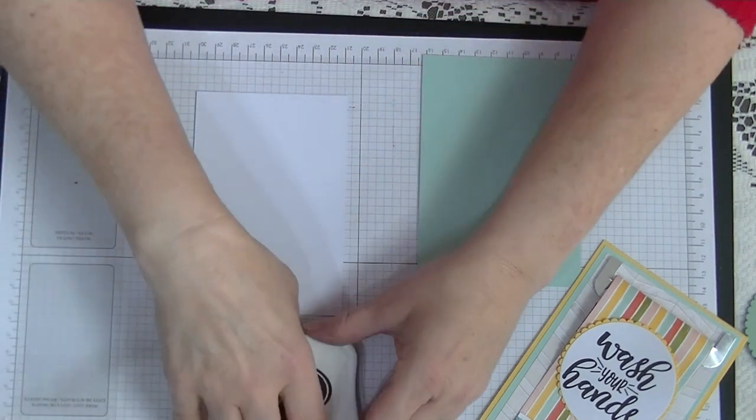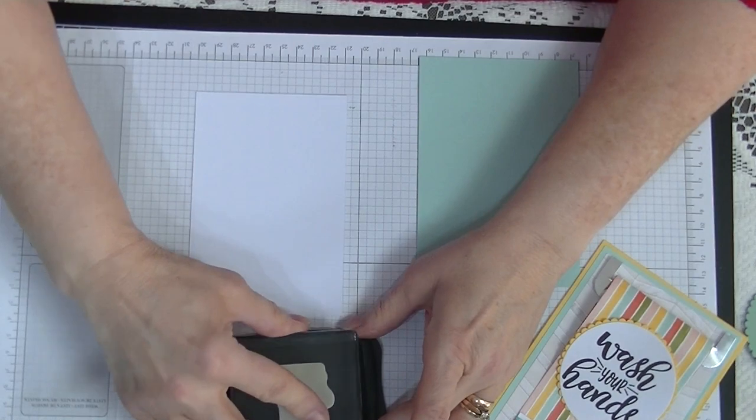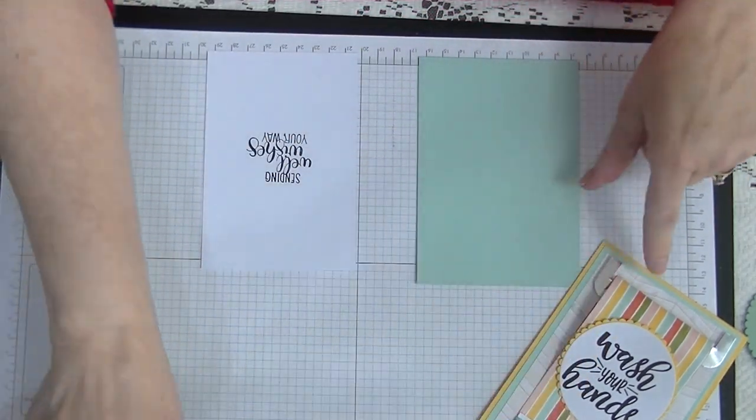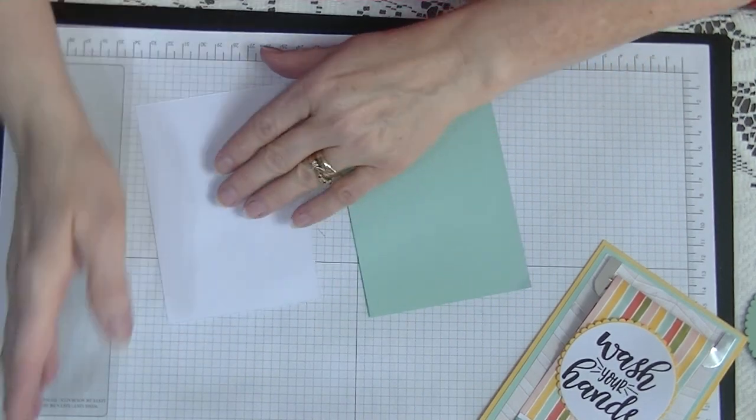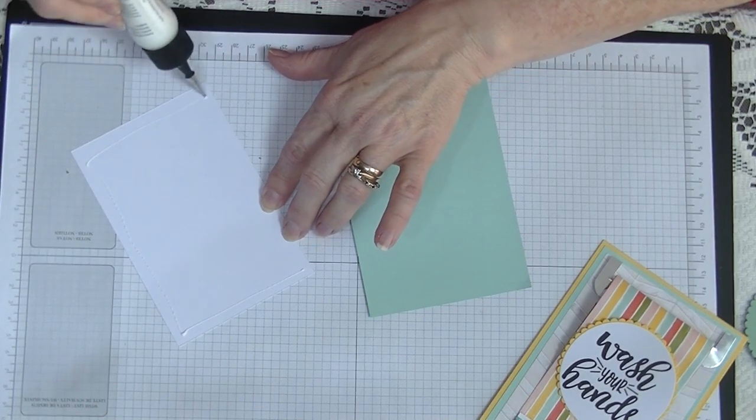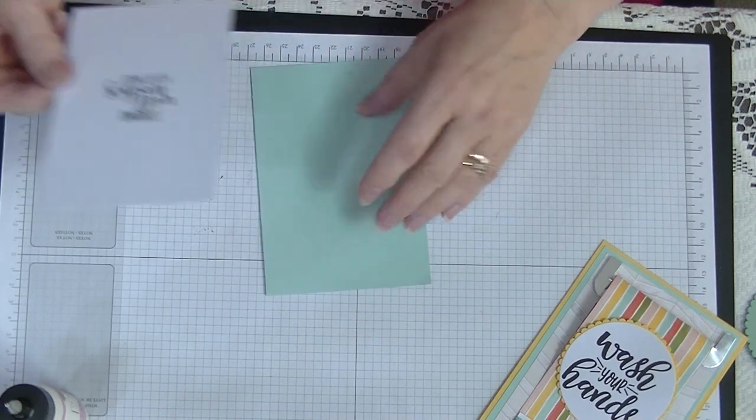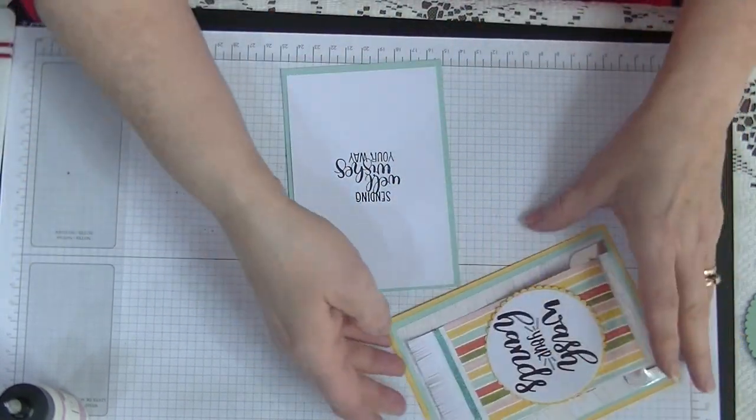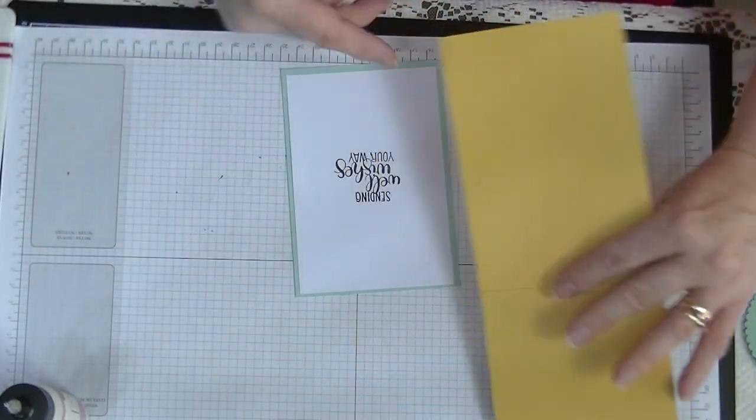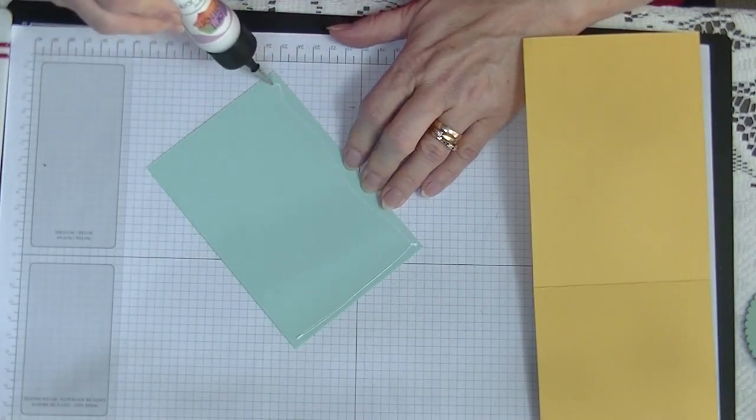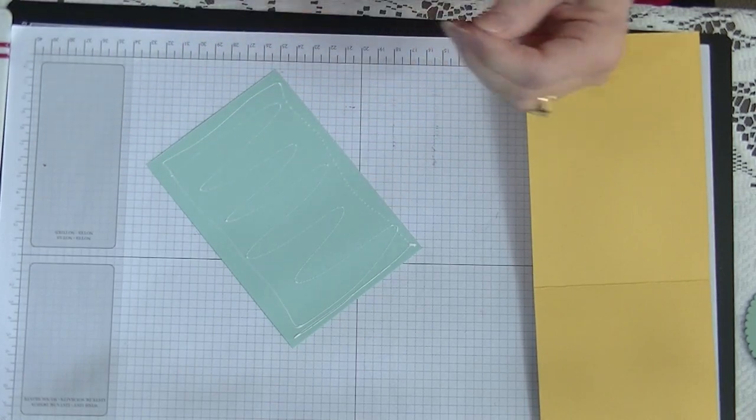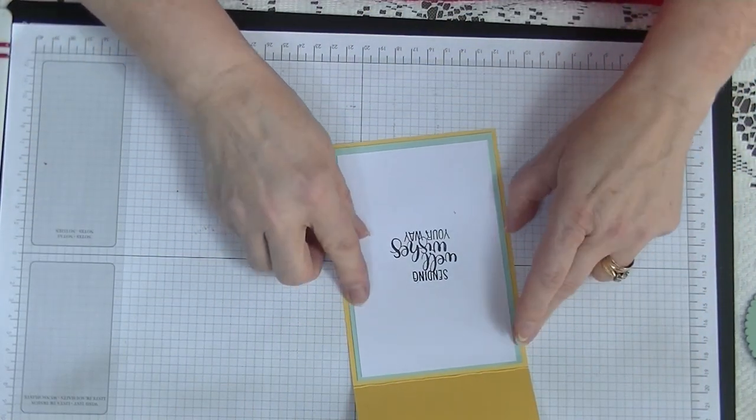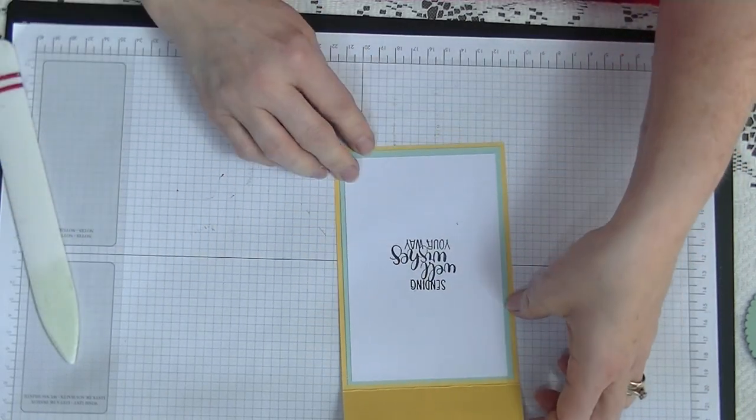Let's pull my sleeves up again and we'll work on the inside. We're going to just use some memento ink and we're going to stamp our Sending Well Wishes Your Way and I'm going to just stamp that into the middle of the card. That's all the stamping we're doing. We're going to glue this to the other piece of card which is pool party and then we're going to glue that to the inside of our card. That's the inside of our card done.